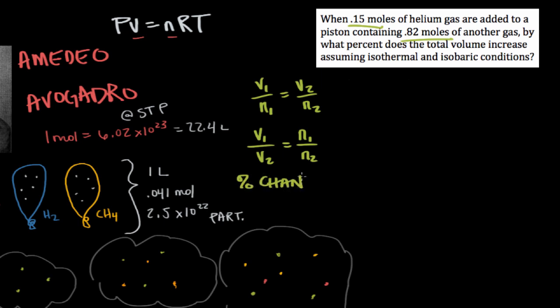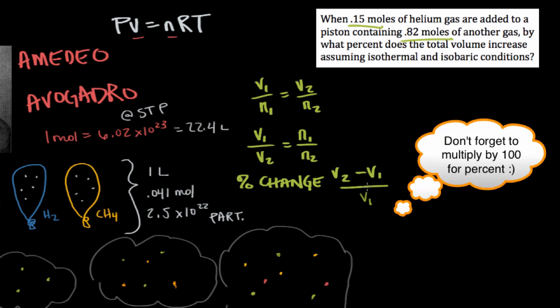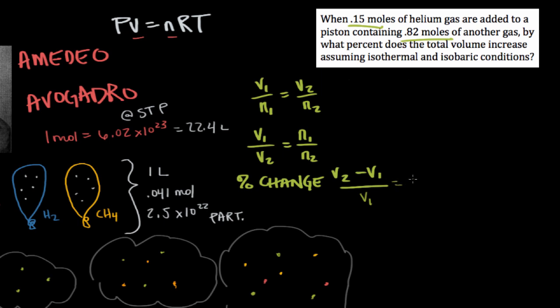For that reason, the percent change in volume looks like the final volume minus the initial volume divided by the initial volume. This is just the formula for percent change, which is pretty intuitive. The change divided by the initial volume is going to give us the percent change. We know that this is equal to the percent change in the number of moles, so we can say N2 minus N1 divided by N1.